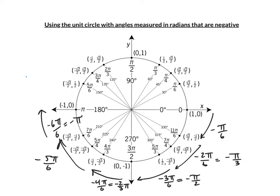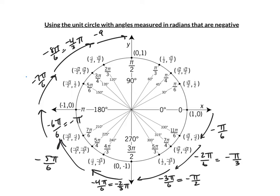Remember, pi is 180 degrees. So I can keep going — there's negative 7 pi over 6. And another one is negative 8 pi over 6, which is negative 4 thirds pi. And one more: there's negative 9 pi over 6, which — dividing both by 3 — is negative 3 pi over 2.